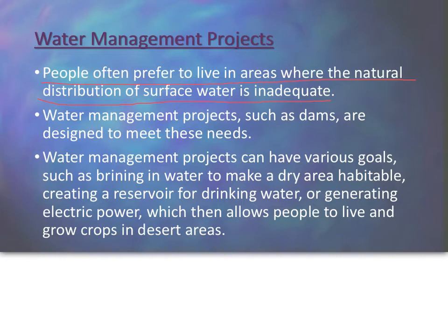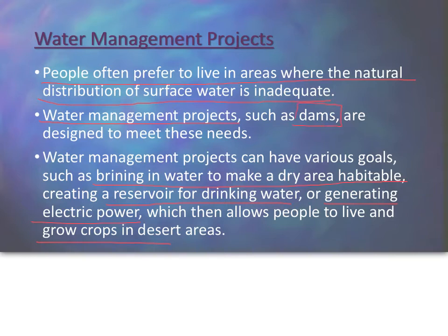But a lot of people — think of California, Florida, New Orleans, Texas — all these areas have very little natural fresh water. So we need to develop water management projects, ways to get water to these places. We have to bring in water to make a dry area habitable, whether that's creating a reservoir, an artificial lake for drinking, using water to generate electricity, or allowing people to grow crops. Most of these water management projects involve building dams.